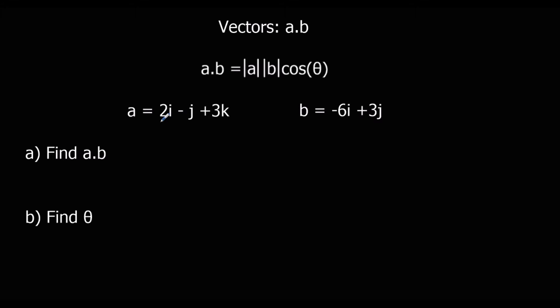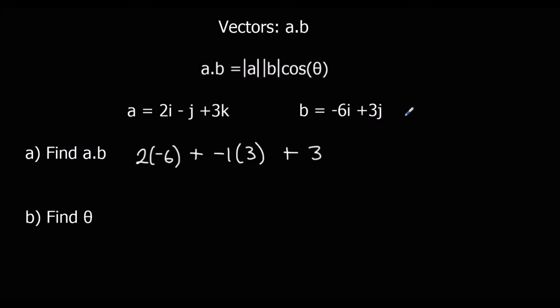We've got the i's: 2i and minus 6i, so we do 2 times minus 6. Plus, times the j's together: minus 1 and 3, so minus 1 times 3. Plus the k's times together: 3 times 0, since there's no k for b, so it's 0k. That gives us negative 12, minus 3, plus 0, so that's negative 15.